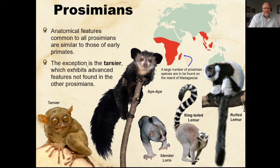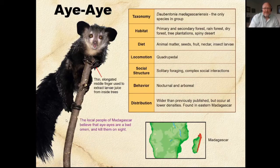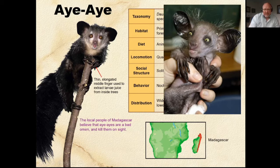The tarsier exhibits some advanced features not found in other prosimians — these guys are tiny, not big at all. The aye-aye is a primate and you can see its face is very much like the prosimians. It has the longest middle finger, which it uses to probe holes in trees to extract wood-boring caterpillars. Unfortunately, the people of Madagascar thought they were so ugly that they used to hunt them as demons and kill them — that's why they are highly endangered.